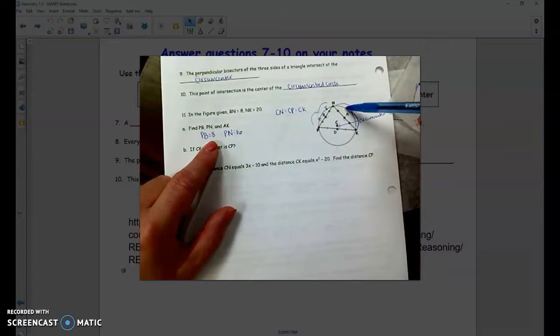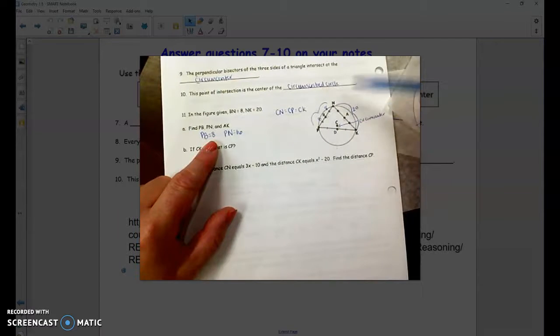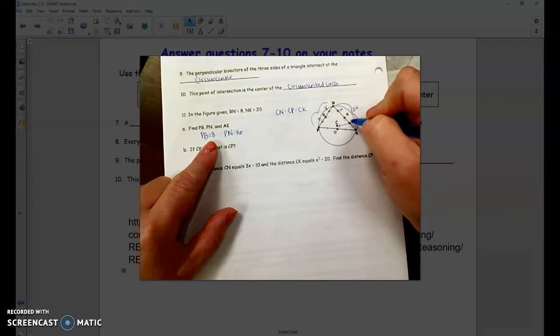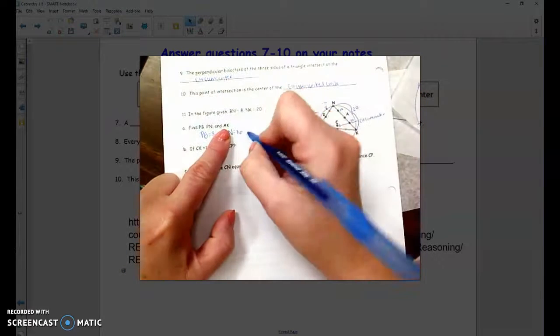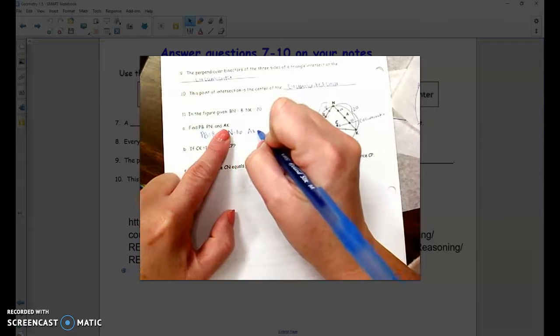Over here, since we know N to K is 20, well if this is a perpendicular bisector, we're separating that to two equal parts. Each of these equal parts would have to each be 10 to add up to be 20. So A to K is one of those parts. A to K would have to be 10.